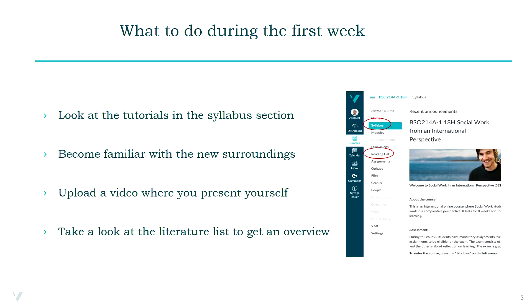You will work together with your fellow students in different ways. In the curriculum plan you can read the expected learning outcomes. The literature list is divided into topics that are crucial for the course — please take a look to get an overview. In addition to the compulsory literature list, we encourage you to search for literature in English describing relevant issues in your own country.